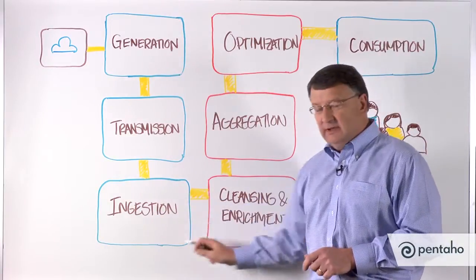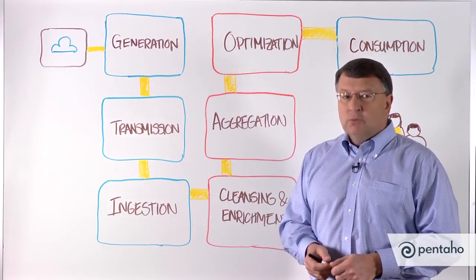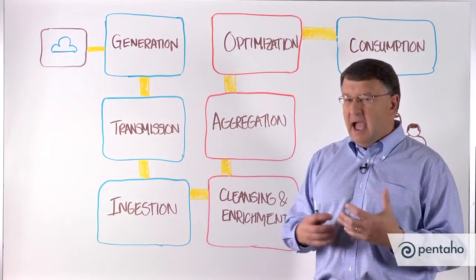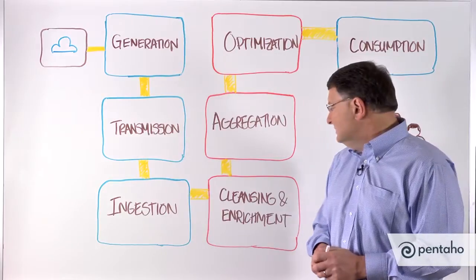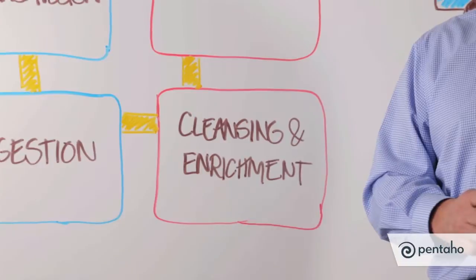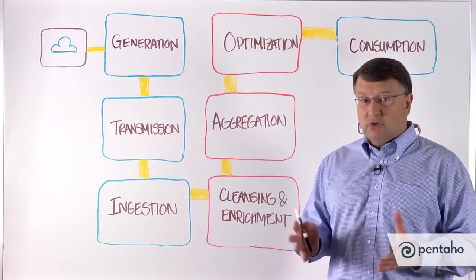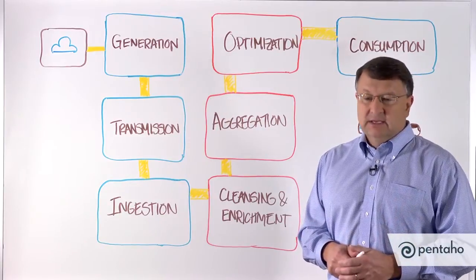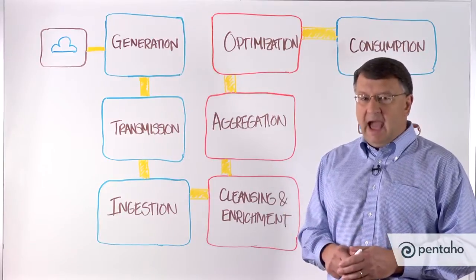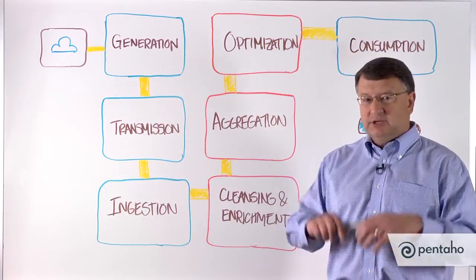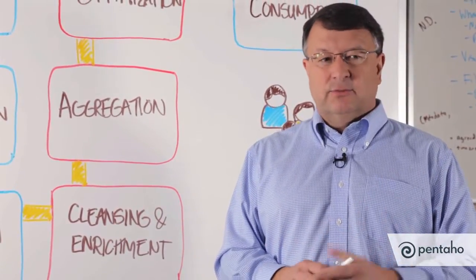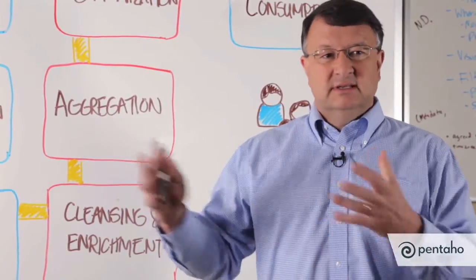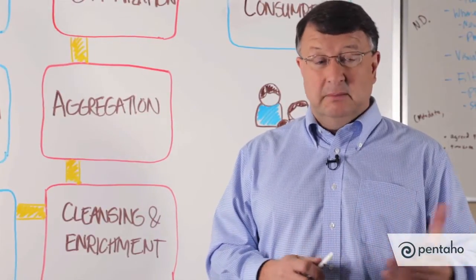After the ingestion phase, which involves reliably inserting data into the cluster, we're ready to perform transformation-type activities on the data. We have a phase called cleansing and enrichment — the whole process of taking raw data, which is usually unstructured or semi-structured, parsing that data, putting it into individual fields, and correcting inconsistencies. That means dealing with data quality problems, and equally important, adding what we call reference data. Reference data is all the information about your raw data that helps you make sense of it — for example, taking a reference to a user ID and tying that to a user profile database to bring in information about the user so we can do customer analytics and get better insight into behavior.